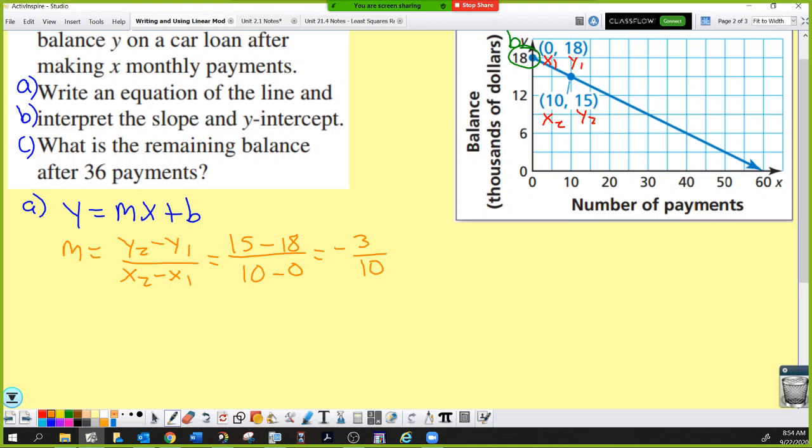I know in a moment I'm going to have to interpret that, so it would probably be better if this was a decimal. Just like describing speed, you wouldn't say 100 miles per 2 hours, that's weird. This is going to give you negative 0.3. Our b value, 18, was given to us right on the graph. Our equation, then, is y equals, remember y is the remaining balance in thousands of dollars, negative 0.3x plus 18.